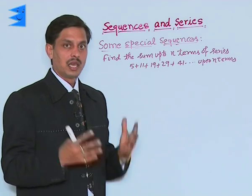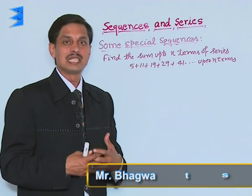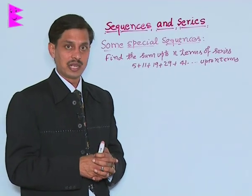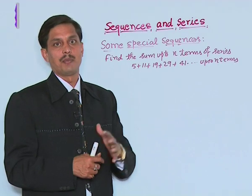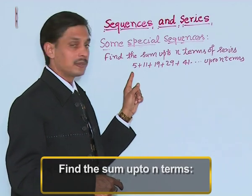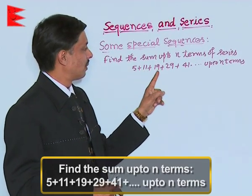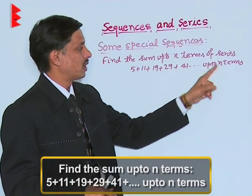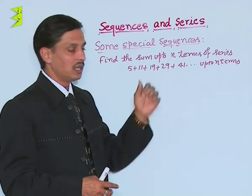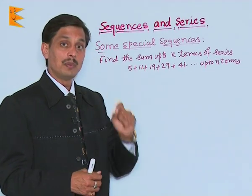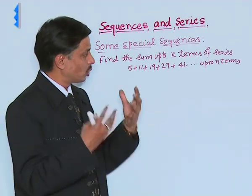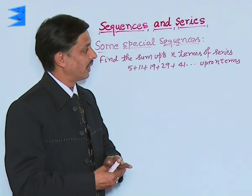One more problem that is again based on some special sequences, but the problem is of method of difference — different type of problems. This is: find the sum up to n terms of the series 5 + 11 + 19 + 29 + 41 + ... up to n terms. We are observing this progression — this series is neither AP nor GP, and there is no pattern observable to find its nth term.